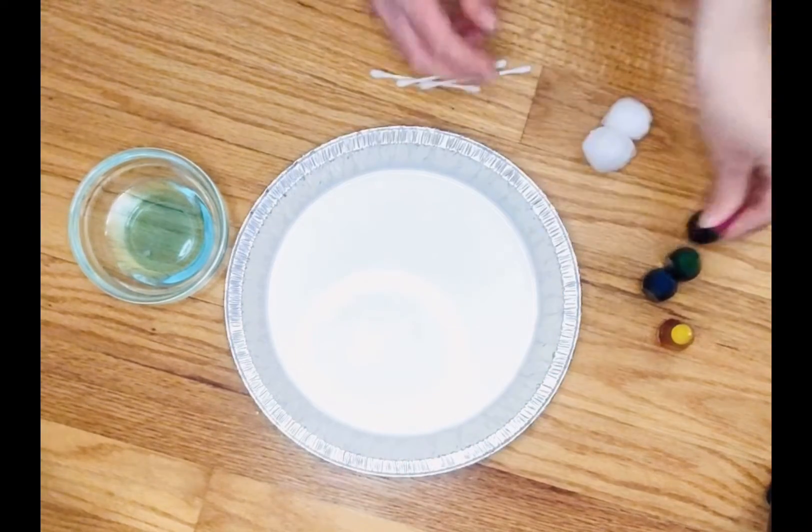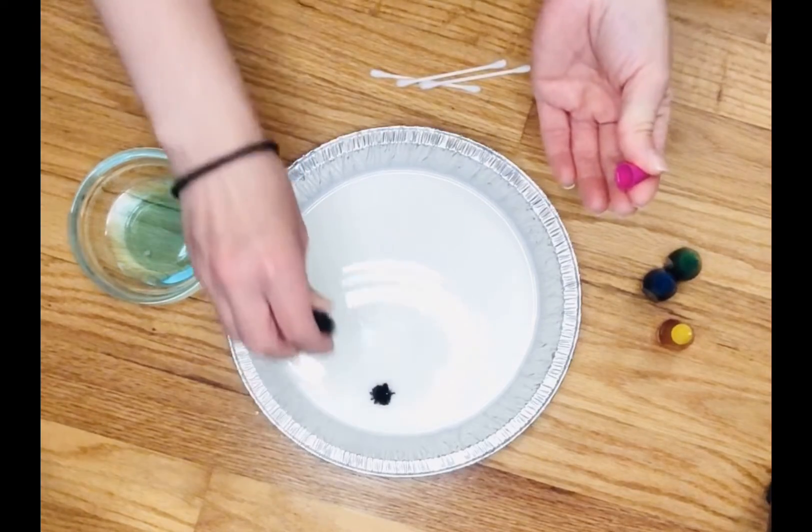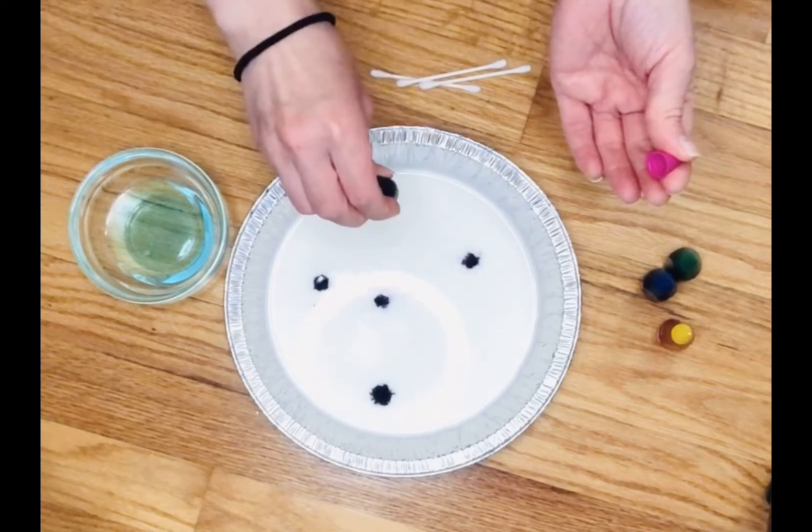So the first step is to add drops of food coloring to your milk. You don't want to mix it around. You just want to do a couple drops.